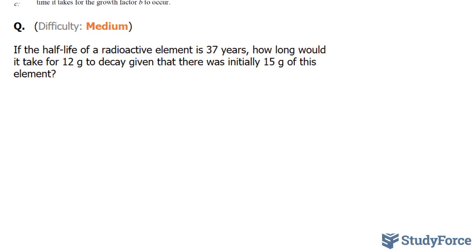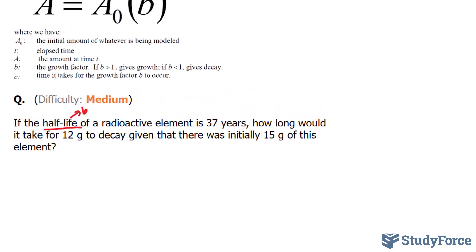The first thing that they tell us is that it has a half-life. This will represent our B. Our B is the growth factor, and when B is less than 1, this means that the initial population is decreasing.